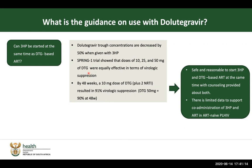Even if drug concentrations are reduced up to 50 percent, earlier trials showed that dolutegravir at lower doses — 10 mg per day or 25 mg per day — was able to achieve effective virologic suppression. However, in terms of current guidelines in South Africa, the data is analyzed and reported as inadequate. Therefore, co-administration of 3HP and DTG in new patients starting ARVs for the first time is not permitted under current guidelines.